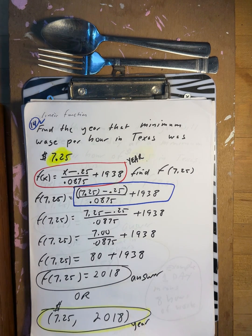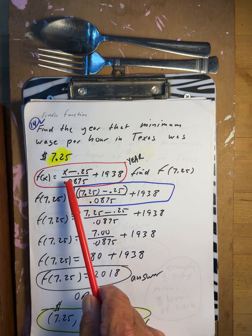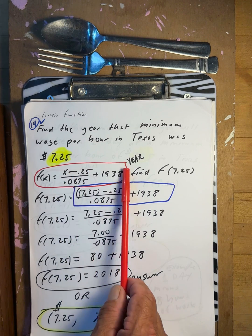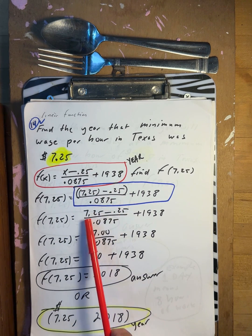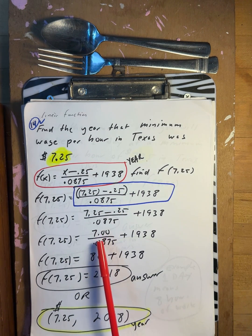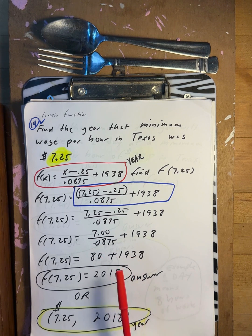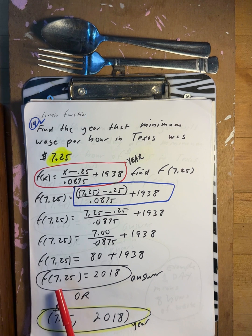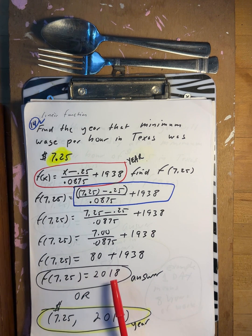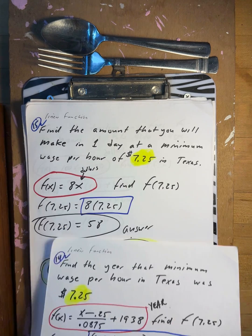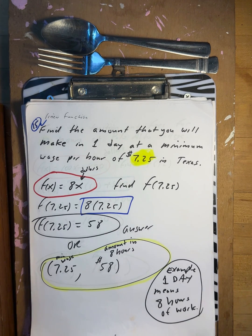Find the year when minimum wage per hour in Texas was $7.25. Using the inverse formula: 7.25 minus 0.25 is 7.00, divided by the coefficient is 80, plus 1938 gives 2018. So $7.25 per hour was in the year 2018.